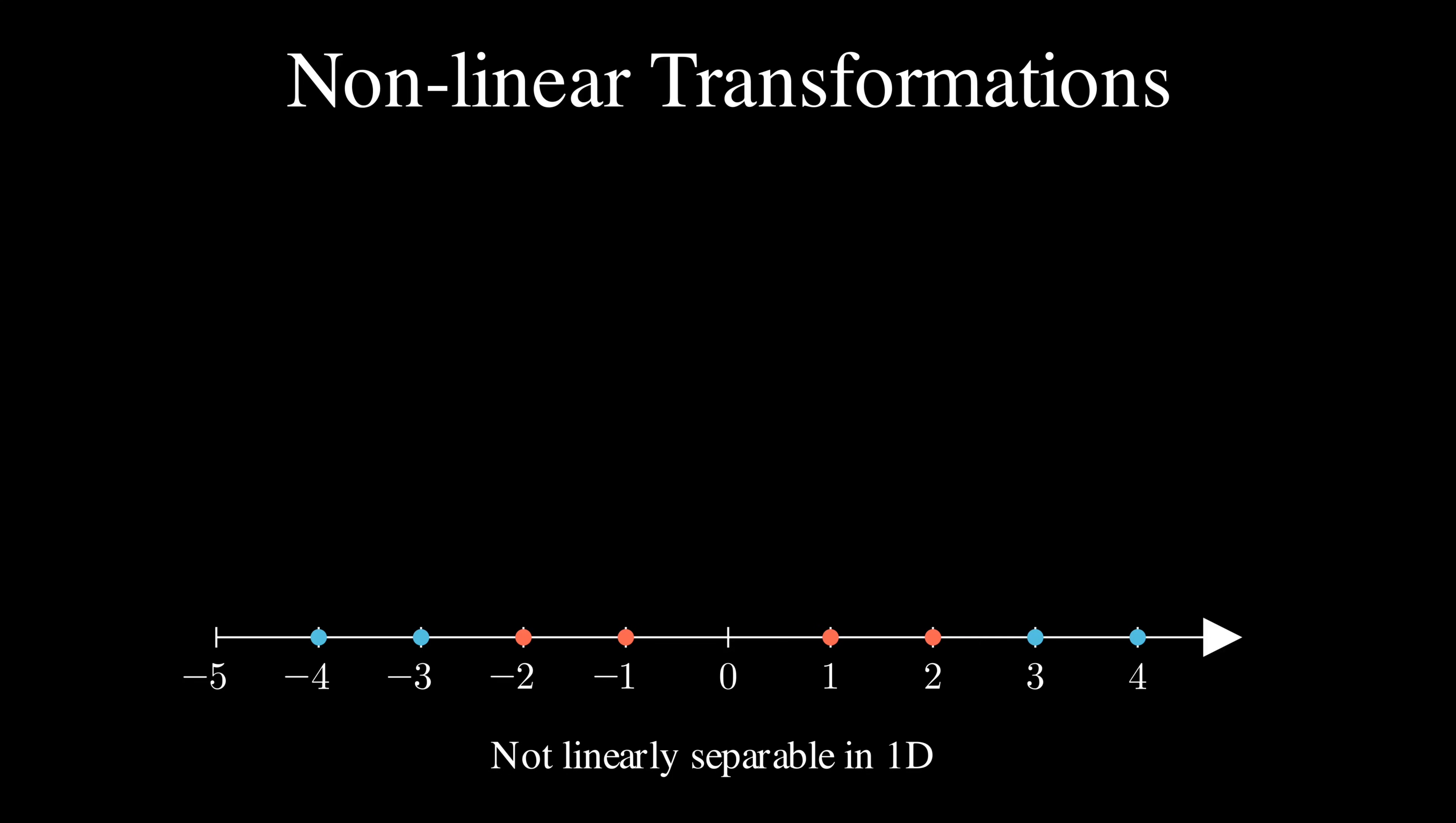This is where transformations come in. What if instead of looking at just the x position, we transform our data to include x² as well? Now, our 1D data becomes 2D data. Each data point x becomes (x, x²). And look what happens.